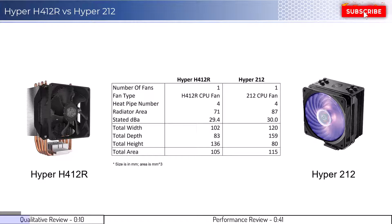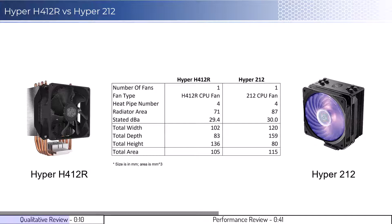Both CPU cooler images show the side of the cooler that would face the RAM. With that in mind, both coolers will not have RAM clearance issues in most setups. Both coolers have one fan, with the H412R cooler using a 92mm fan, while the 212 cooler uses a 120mm fan. It is possible to add an additional fan to the 212 cooler, but the H412R cooler is only set up to allow for a single fan on the radiator.